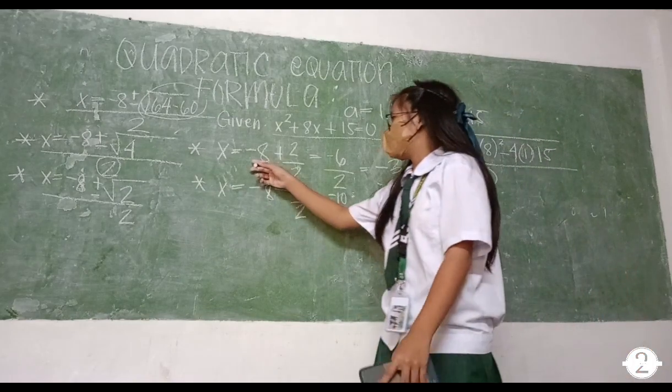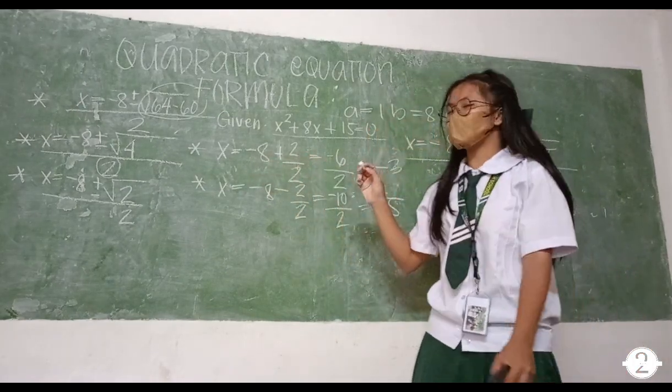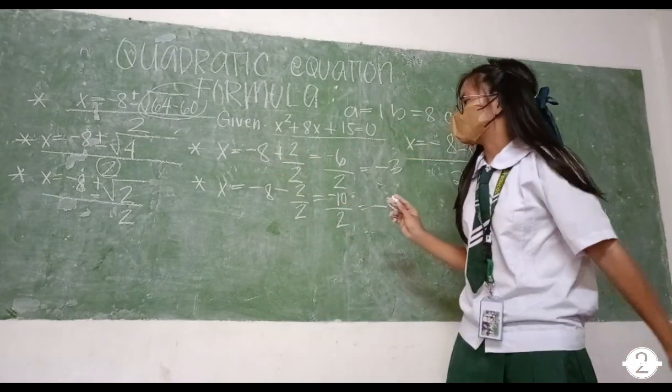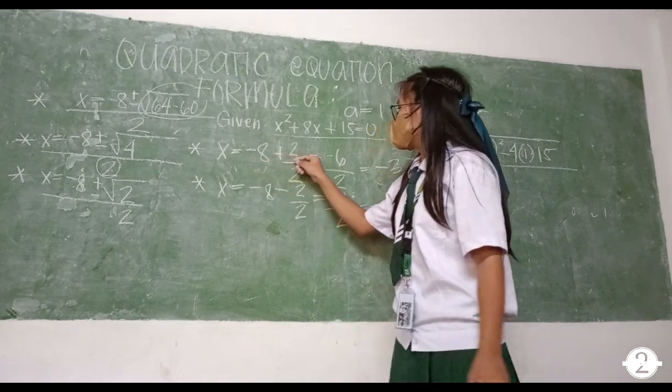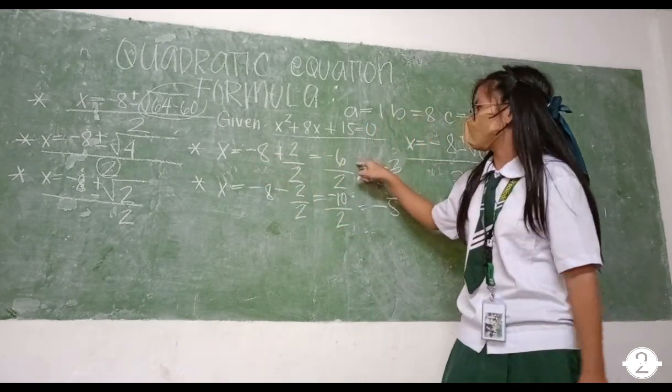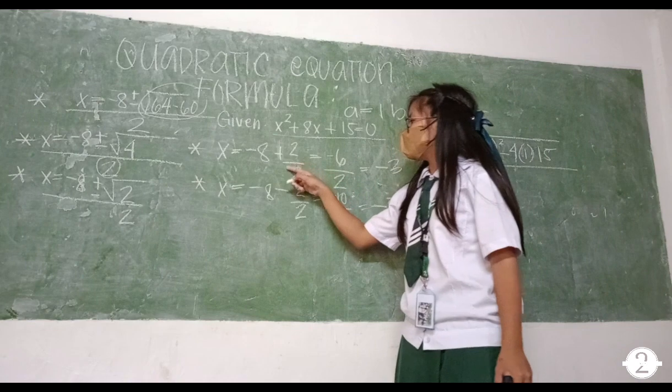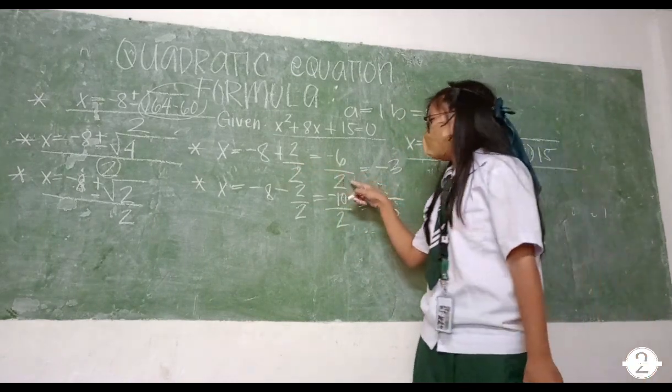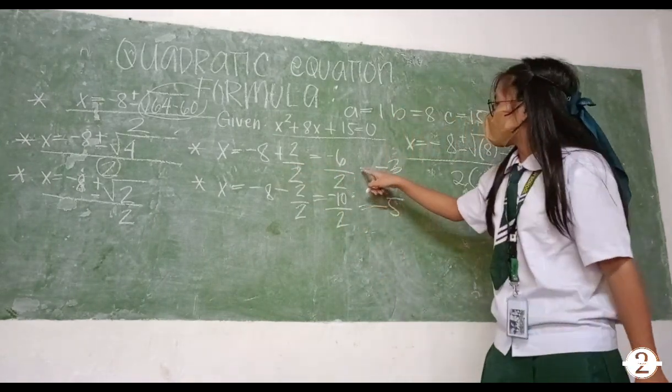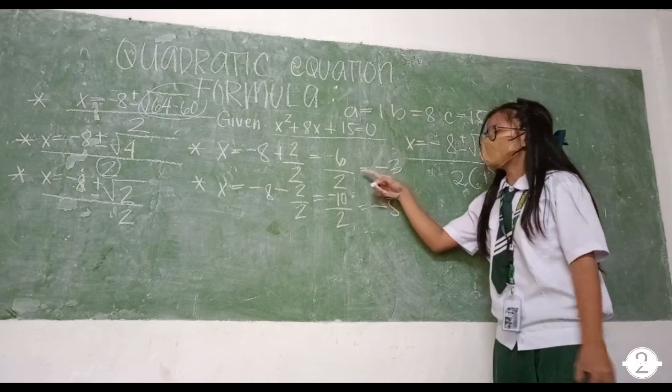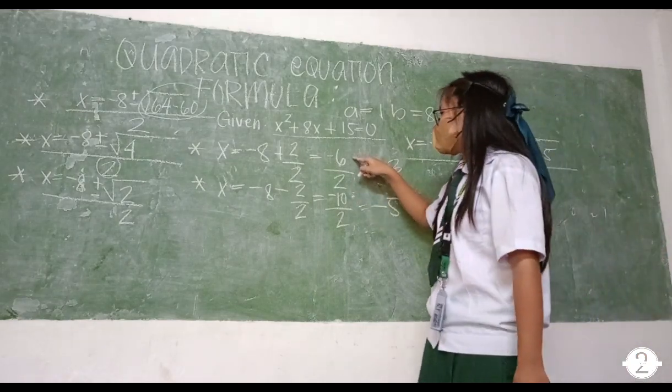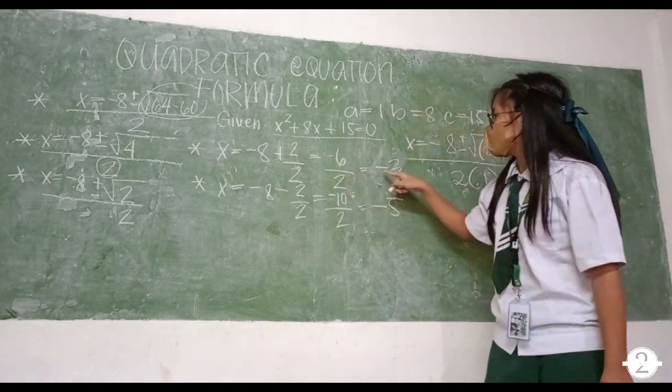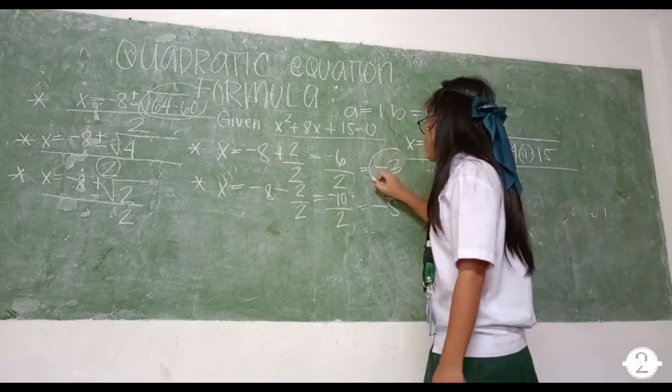So kapag ang pinag-add ay negative at isang positive, palagi siyang magiging solution. Negative 6 over 2. Kapag ang numerator ay 6 at denominator ay 2, ipag-divide mo lang yung dalawa. Negative 6 divided by 2 is equals negative 3. Kaya nakuha yung negative 3.